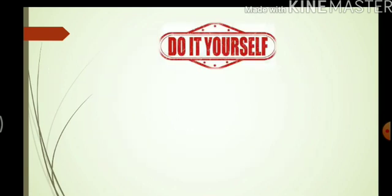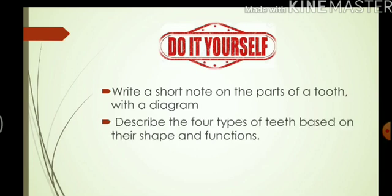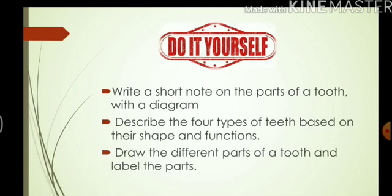Now there are some do-it-yourself questions. First, write a short note on the parts of a tooth with a diagram — write about the different parts of the tooth, draw a diagram, and do not forget to label the parts. Next, describe the four types of teeth based on their shape and functions. Finally, draw the different parts of a tooth and label them — this is similar to question one but focuses only on drawing the diagram, which will help you memorize it for the examination. With this we come to the end of this chapter.